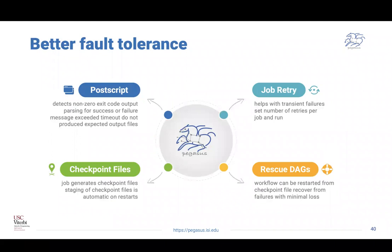In the meantime, we've looked at different fault-tolerant strategies — from job retries and data transfer retries to rescue DAGs where we give the executable workflow to be fixed. We also checkpoint files so we can restart things.